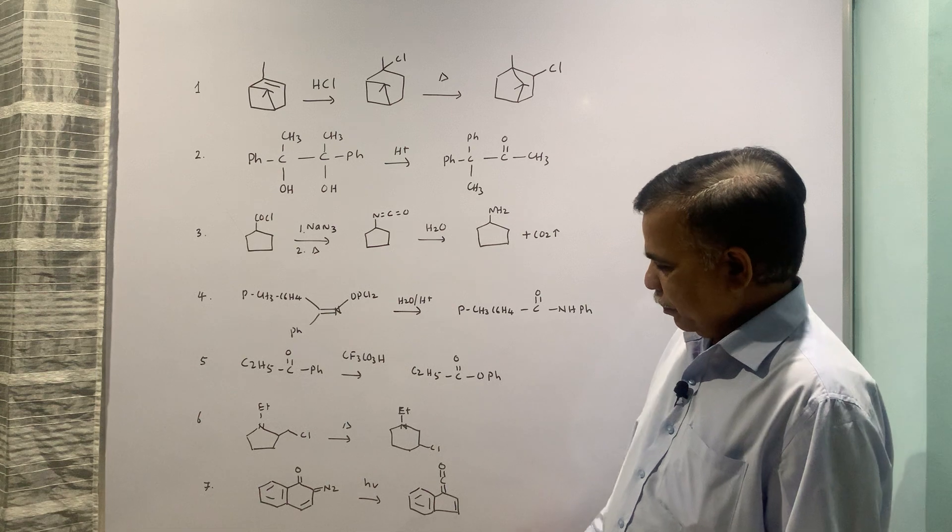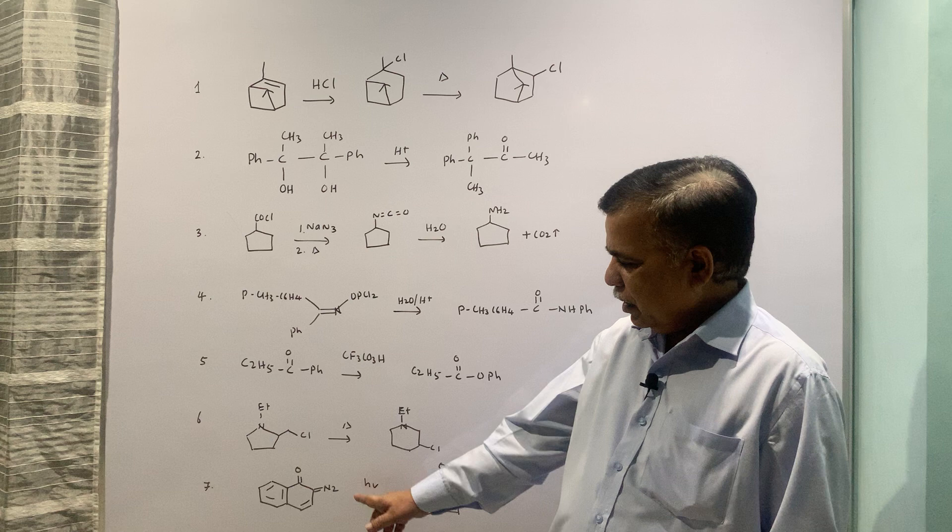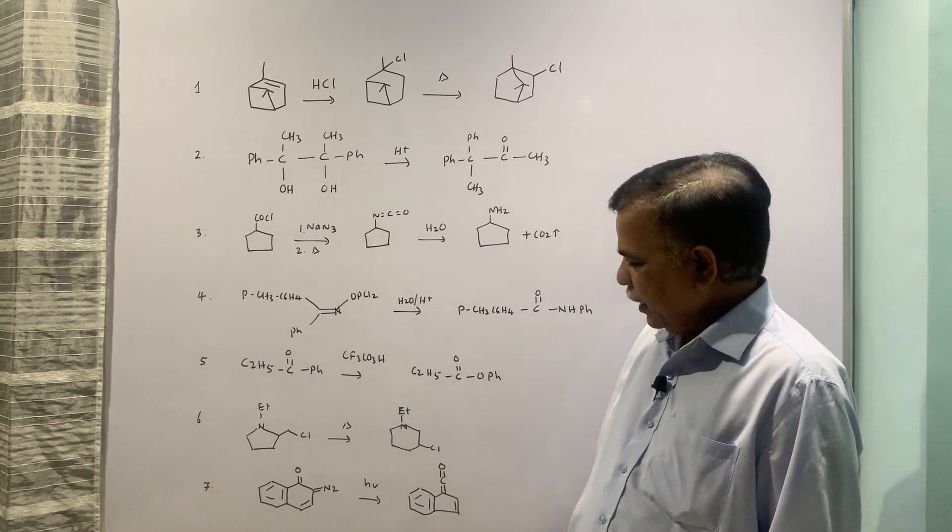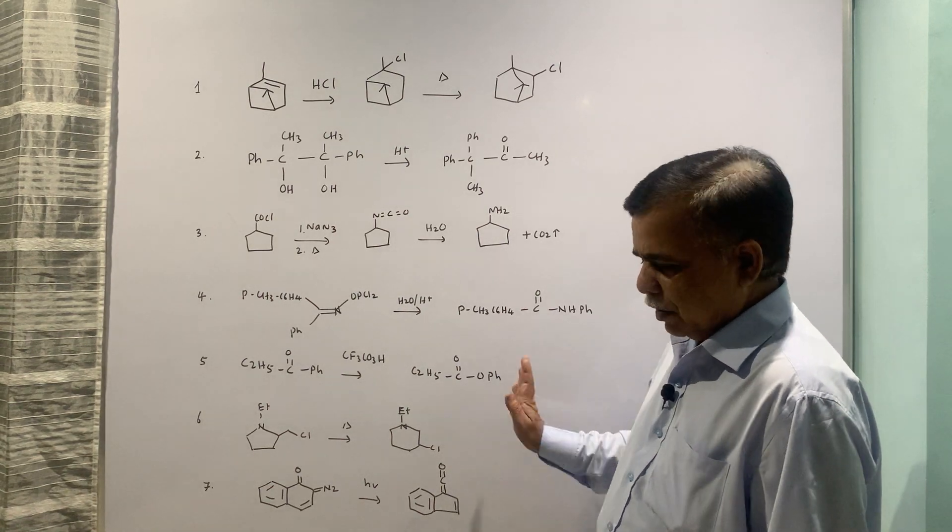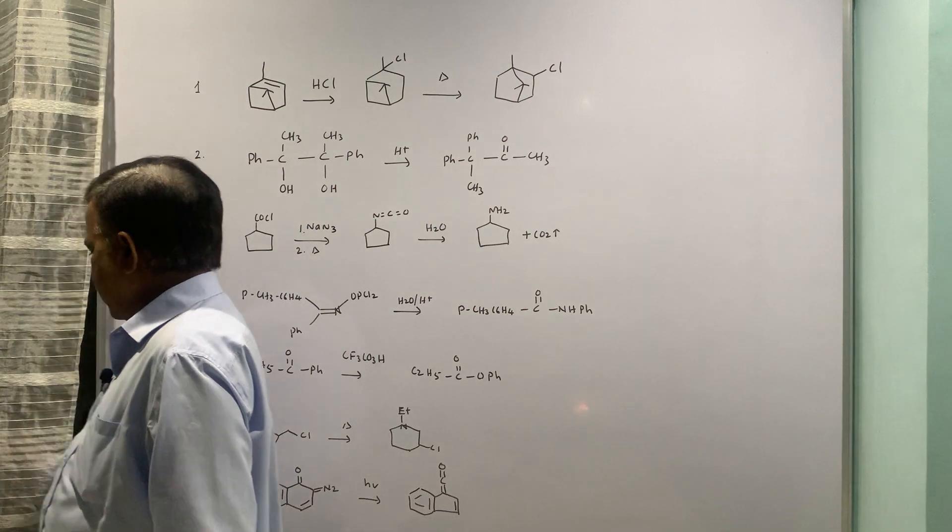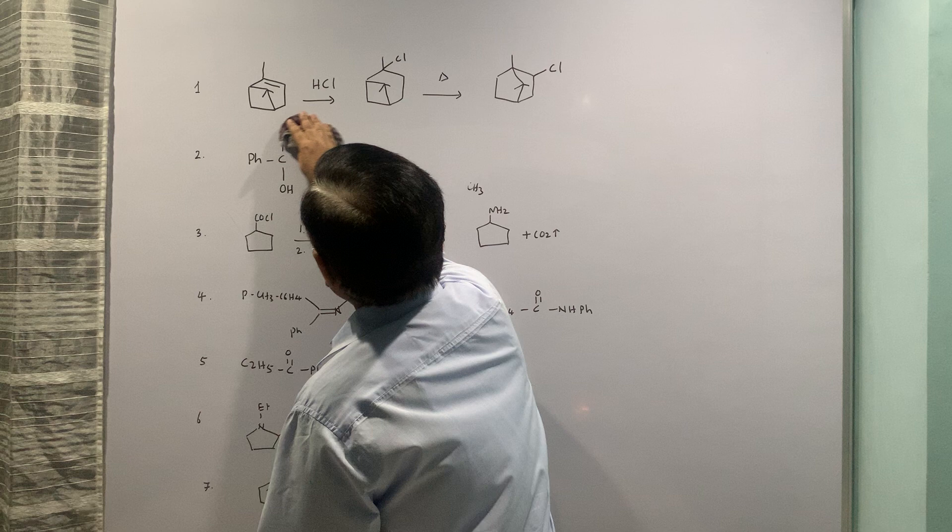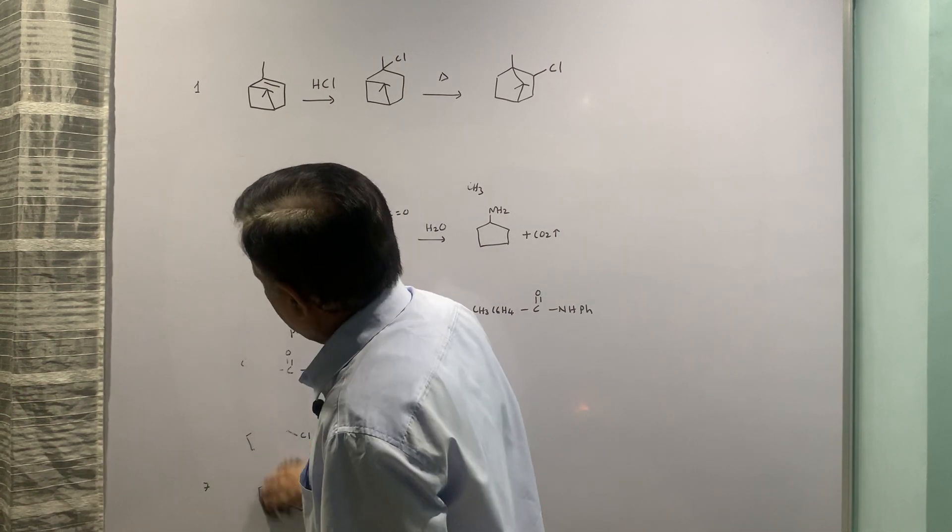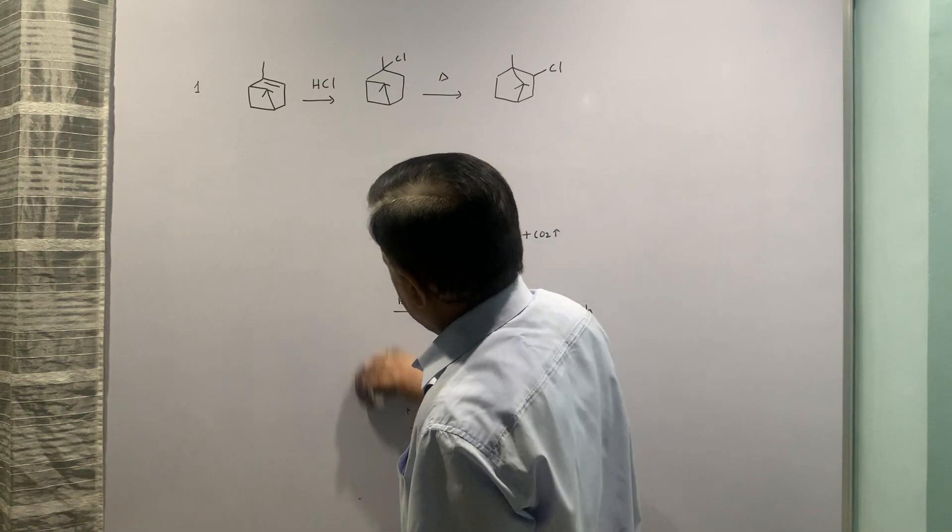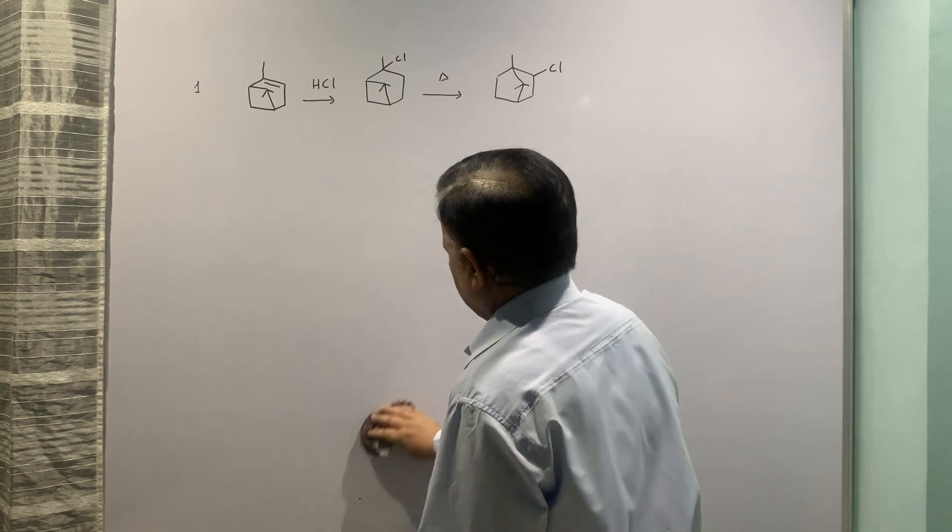The last example is Wolff rearrangement wherein the diazo ketone is treated with photolysis and you get ketene which on workup can give you the acid, the homologous acid to be precise. Now let us write down the mechanism for each step.